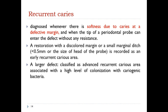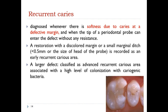Recurrent caries is diagnosed whenever there is softness at a defective restoration margin. When the tip of a periodontal probe can enter the defect without resistance, that indicates recurrent caries. A restoration with a discolored margin or marginal defect less than 0.5 mm is recorded as early recurrent caries; a larger defect greater than 0.5 mm is classified as advanced recurrent caries, associated with high colonization of cariogenic bacteria. This can be seen in a maxillary first molar restored with composite resin where the mesial wall is affected.